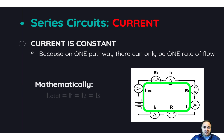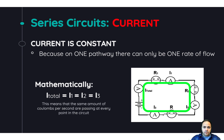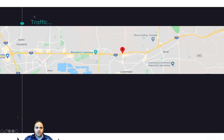Mathematically, we can say that the total current of the loop is equal to the current running through resistor one, which is equal to the current running through resistor two, which is equal to the current running through resistor three. This means that the same amount of coulombs per second are passing at every point in the circuit.